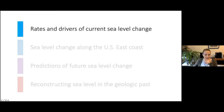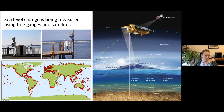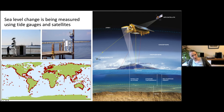Sea level change is measured around the globe predominantly through two different means. One is through directly measuring sea level through tide gauges along the shoreline. This gives you a sense of the distribution of tide gauges around the globe — essentially almost everywhere you have a coastline, you have a tide gauge that measures sea level. This is the tide gauge in Battery Park; next time you're down there, keep an eye out for it.